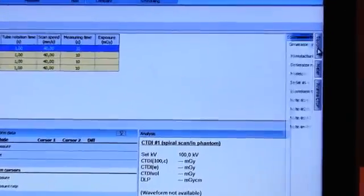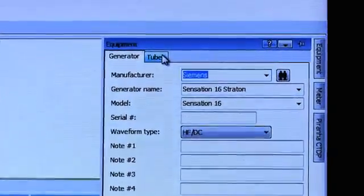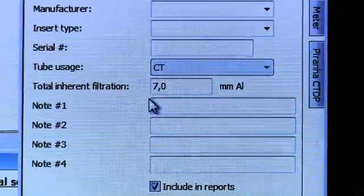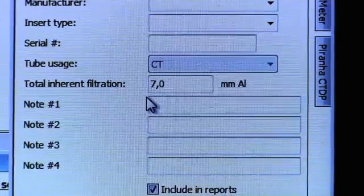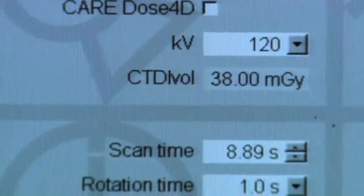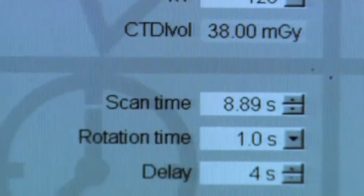If you know the total inherent filtration, you can add that too. Or you can use the default value of 7 mm of aluminum. Once the measurement settings have been set for the scan over the phantom, you should enter the measuring parameters into Ocean.